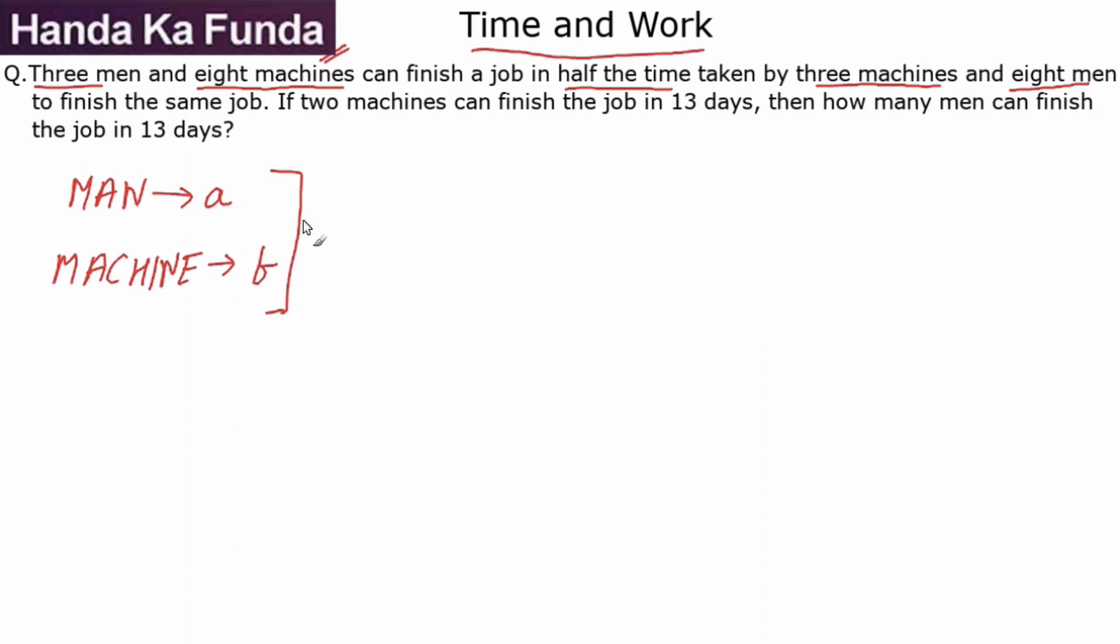So what am I given? Three men and eight machines. So work done in one day by them is 3a plus 8b. We are given they can finish a job in half the time, so let's say they work for one day.